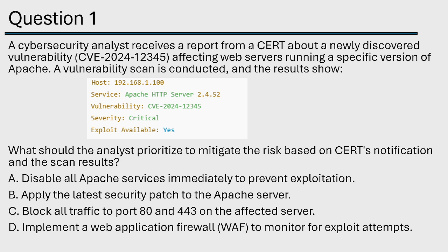Let's see these answers. A: Disable all Apache services immediately to prevent exploitation. Based on the limited information that we have, no — we don't normally disable Apache; that's not normally something we do. B: Apply the latest security patch to the Apache server. That kind of makes sense. The Apache patch would fix the issue. We do see that it does have critical severity. Definitely a good answer. C: Block all traffic on port 443. That makes no sense — that's just going to shut down our web server, and Apache is a web server.